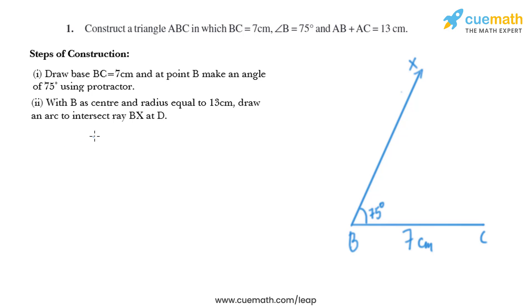Now I'll put the compass at B and will measure the opening as 13 centimeter and will draw an arc like this that intersects BX at D. Will name this point as D.